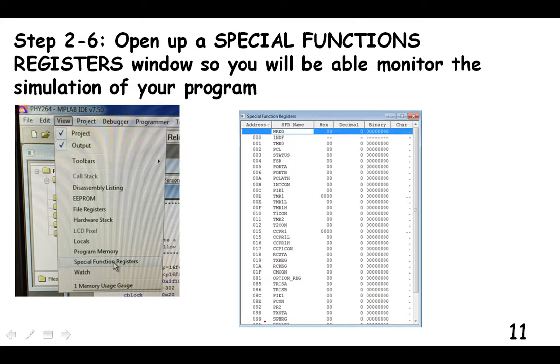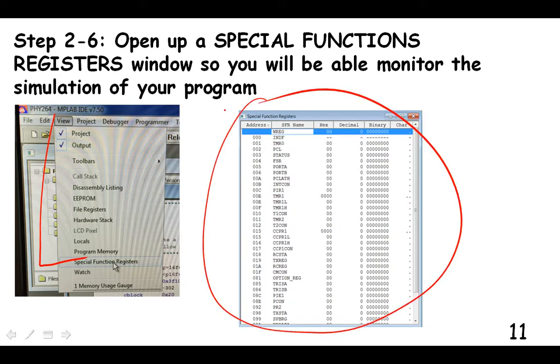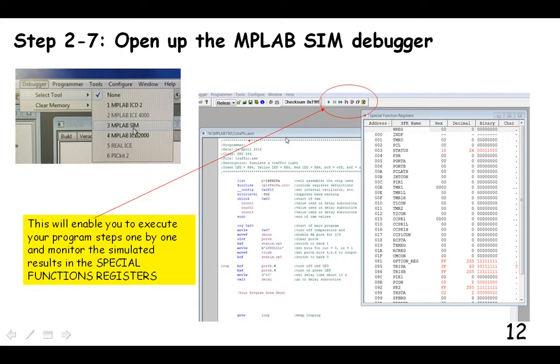Step two, six, open up the special functions. So go into view, special functions, and then you'll see this window appear. And that window is tailored to the particular microcontroller that we're using. And it shows every one of the registers in that microcontroller. And then what we can do is monitor those registers as we simulate the program in our MPLAB.